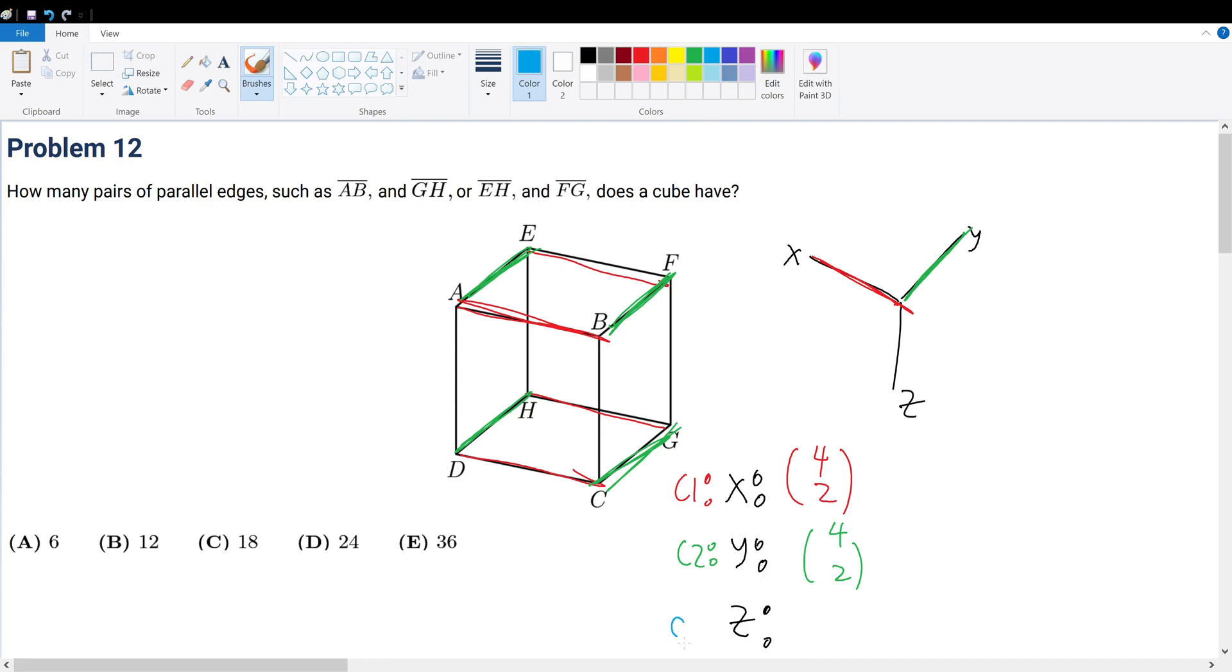And likewise, by deductive reasoning, we can say that for choice three, for case Z, we have four pick two as well. But just to show you, we have BC, we have FG, we have EH, and we have AD. We have four lines. We want to pick two of them, so four pick two.